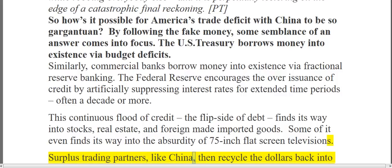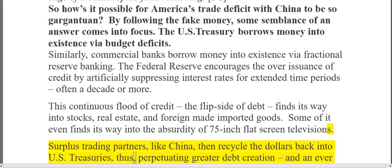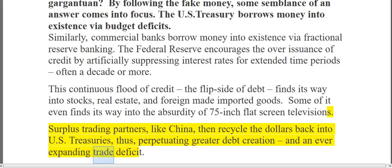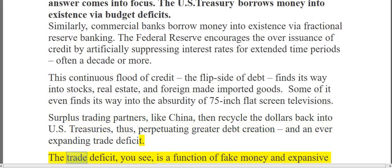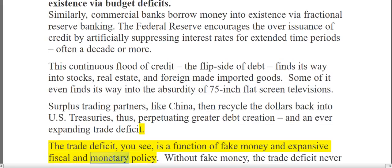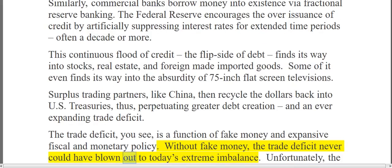Surplus trading partners like China then recycle the dollars back into US Treasuries, thus perpetuating greater debt creation and an ever-expanding trade deficit. The trade deficit, you see, is a function of fake money and expansive fiscal and monetary policy. Without fake money, the trade deficit never could have blown out to today's extreme imbalance. Unfortunately, the economy is so dependent upon ever-expanding debt that all it takes is a minor pause — like in 2008 — and the whole edifice is at risk of crashing down.